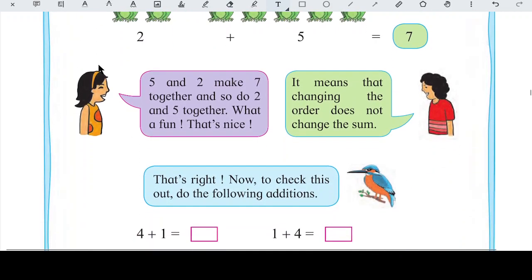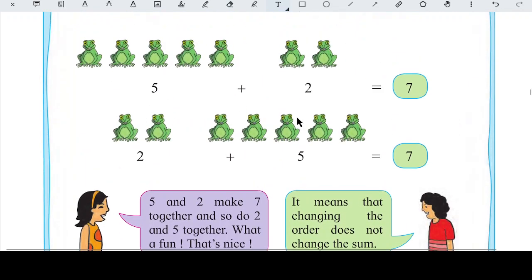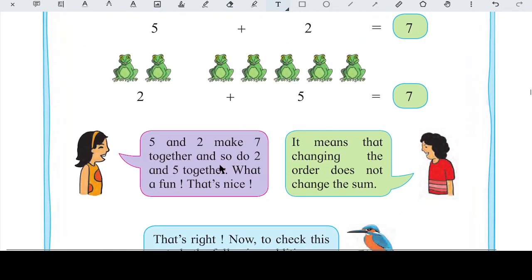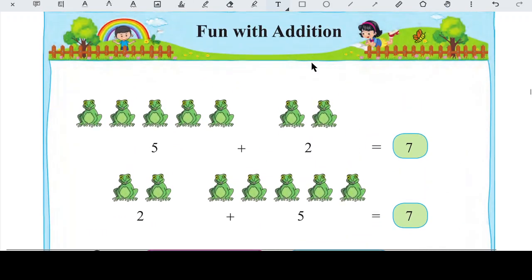So yahan pe ek student hai, woh keh rahi hai, 5 and 2 make 7, 5 and 2 is 7, and so do 2 and 5. Matlab 5 aur 2 to 7 hai hai, lekin 2 aur 5 bhi 7 hai. What fun, that's nice! To yeh dusra student hai, usne kaha, it means iska matlab hai that changing the order does not change the sum.